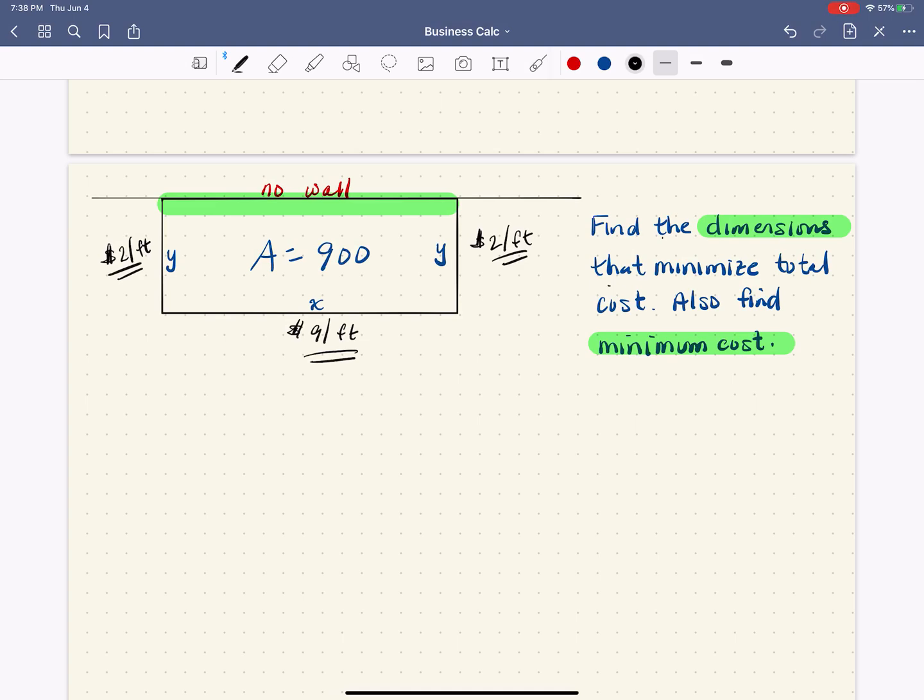Alright, so what we're going to do is solve another optimization problem. What we have here is a fence that's being built against a wall to enclose a rectangular area of 900 square feet. Units are important after all. What we're trying to do is find the dimensions that will minimize the cost.